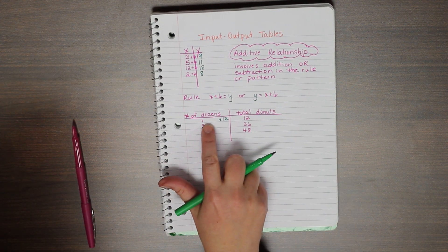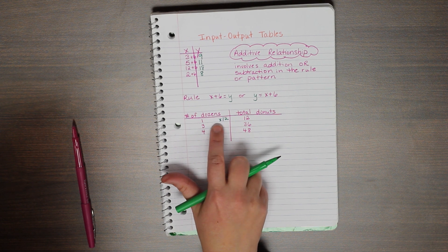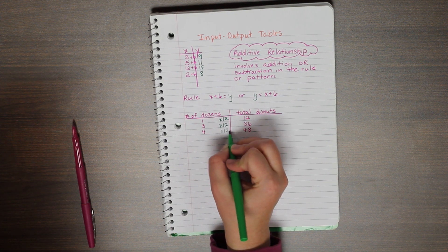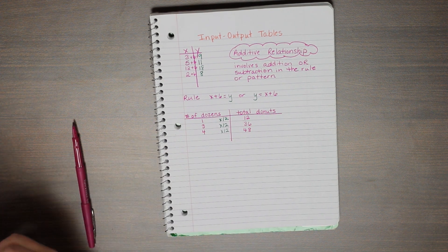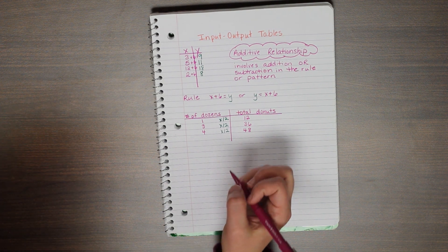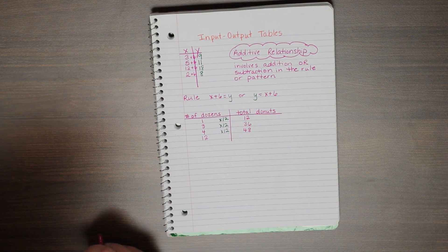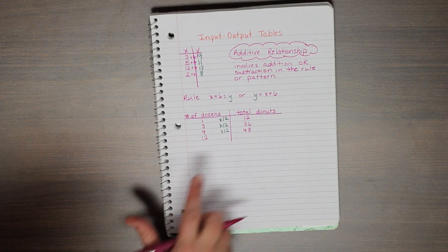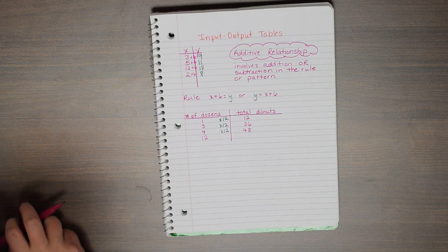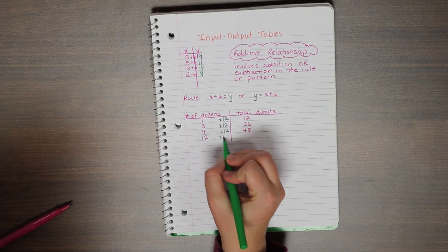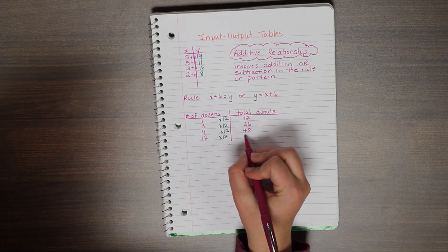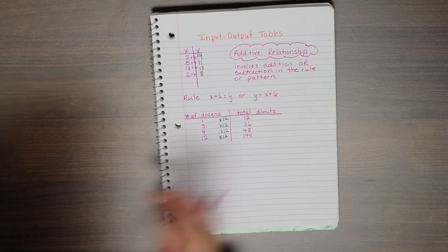And I notice that that works for each row. So 1 times 12 is 12, 3 times 12 is 36, 4 times 12 is 48. And just like we talked about previously, once we have found a rule or a pattern, we can use that to help us find additional values. So if I now asked you, how many total doughnuts is in 12 dozens, I can use my rule of times 12 to determine that 12 dozens times 12 doughnuts in each dozen is a total of 144 doughnuts.